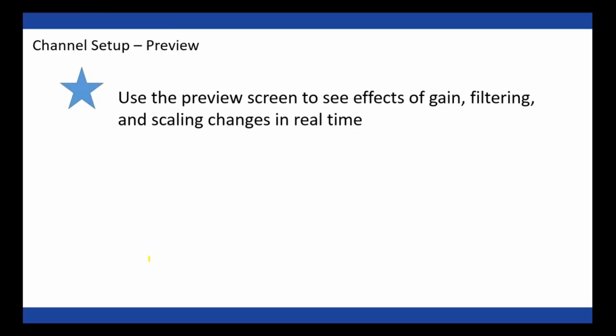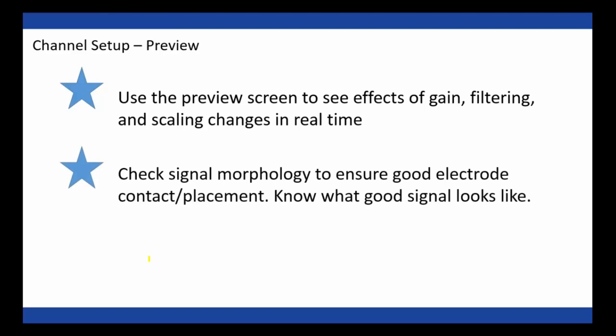To recap: you can use the preview screen to see the effects of all your processing in real time, helping you make informed decisions about gain, filtering, and scaling. You can use it to check signal morphology and ensure good electrode contact. You should also know what good signal looks like — we're working on a database of good signal examples that will be available on our support site. For now, take a screenshot of good data when you see it, keep it in your lab, and use it as a reference. Always preview your data.